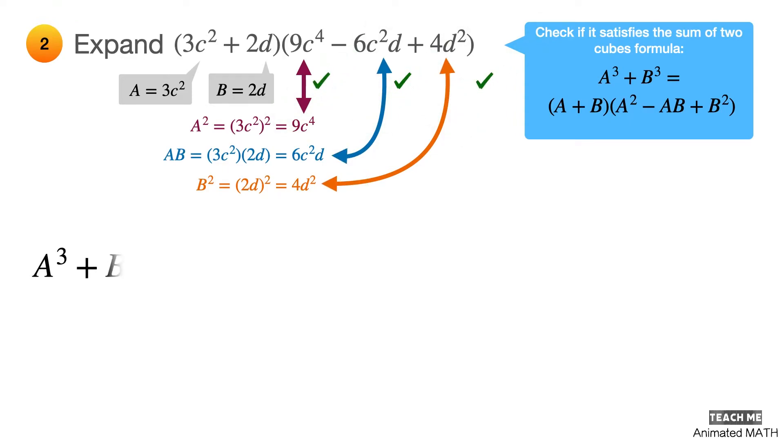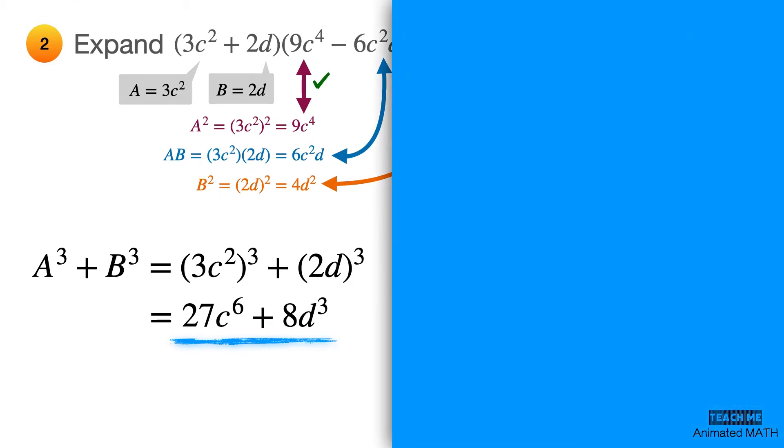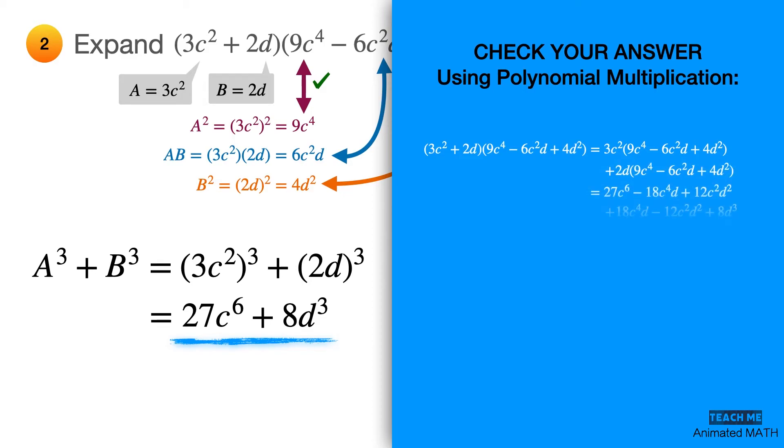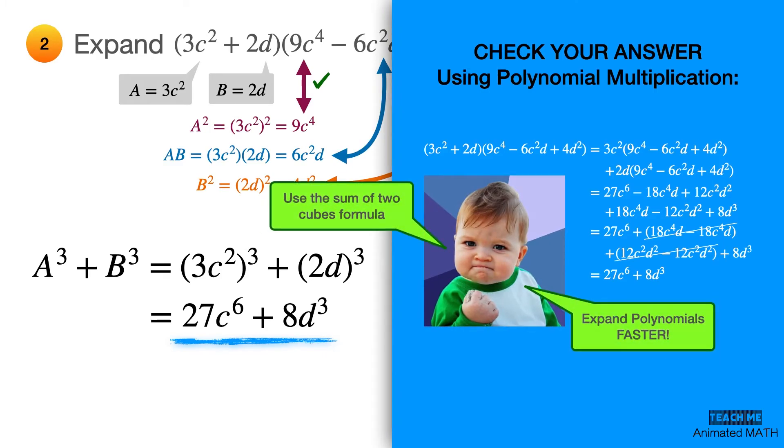Now compute for a cubed plus b cubed by substituting 3c squared and 2d. The final answer is 27c raised to 6 plus 8d cubed. Check it using polynomial multiplication. Observe that, even though the answer is the same, the multiplication process seems to be a lot longer than the previous example. This is because the terms are now more complex, which means that careless students are more prone to errors using this method. Pretty cool that you can use a shortcut, right?